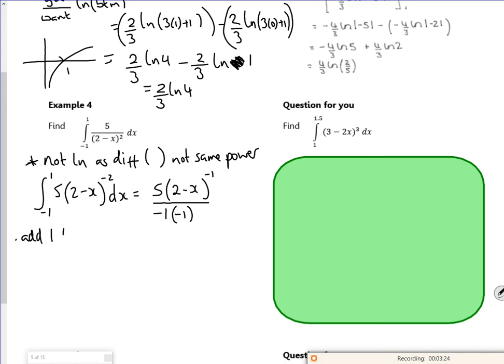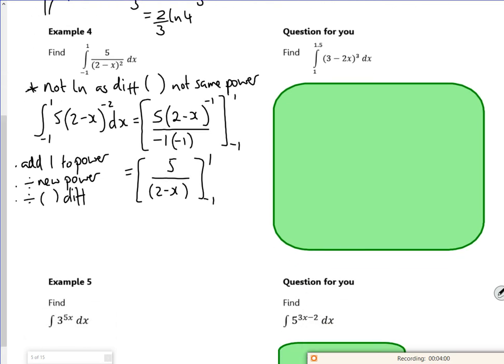So add 1 to the power, divide by the new power, and divide by the inside of the bracket differentiating. Now I really like this stuff. Tidy it all up. I'm going to stick in my little square bracket around it. So minus minus makes a plus, and the power minus 1 is 1 over. So all I've got now is 5 over 2 minus x between minus 1 and 1.